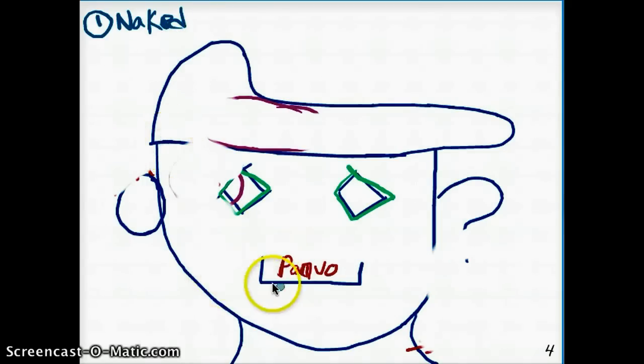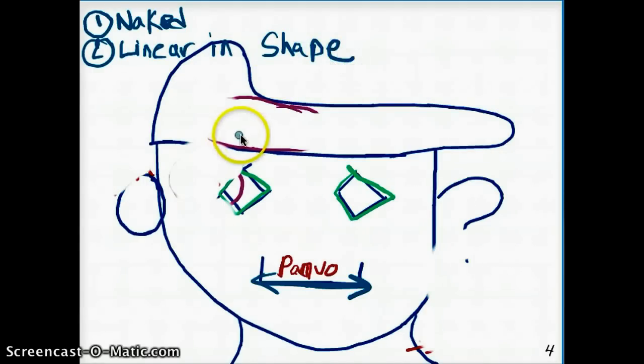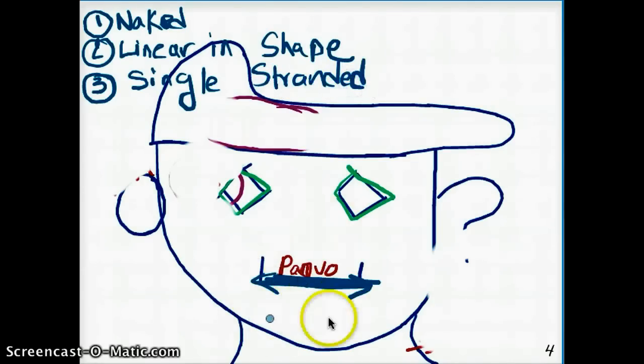That's the first thing we see. Now see how linear the shape of parvovirus is. They're so linear. So they are going to be linear in shape. Now see how it's only one strand right here? It's not two strands. That's why this is the only one which is going to be single-stranded. Remember that. Parvovirus is going to be single-stranded.